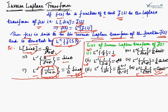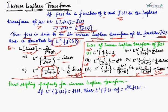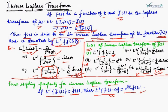Similarly, we have properties corresponding to each Laplace transform property — first shifting property, second shifting property — and for each such property, we get a corresponding formula for inverse Laplace transform. First shifting property for inverse Laplace transform: if L⁻¹{F̄(S)} = F(t), then L⁻¹{F̄(S−A)} = e^(AT)·F(t). That is, if the inverse Laplace transform of F̄(S) is known, then the inverse Laplace transform of F̄(S−A) is obtained by multiplying e^(AT) with F(t).